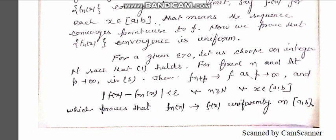As p tends to infinity, the modulus of f(x) minus f_n(x) is strictly less than epsilon for all n greater than or equal to capital N and for all x belonging to the closed interval [a, b]. This proves that f_n(x) tends to f(x) uniformly on the closed interval.